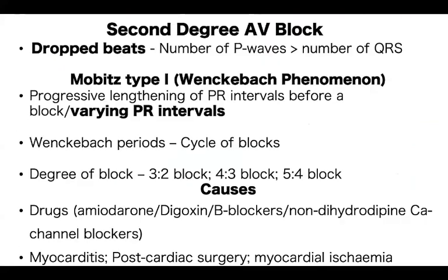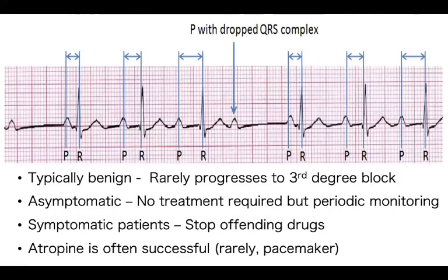Second-degree AV block is where we begin to see failed conduction — you see more P waves than QRS complexes. In Wenckebach phenomena, or Mobitz Type 1, what essentially happens is that the PR intervals progressively lengthen before there is a dropped beat. A number of antiarrhythmic drugs can be implicated. We see a PR interval that is initially normal, gets prolonged, even more prolonged, then a P wave fails to conduct, and then the cycle begins again.